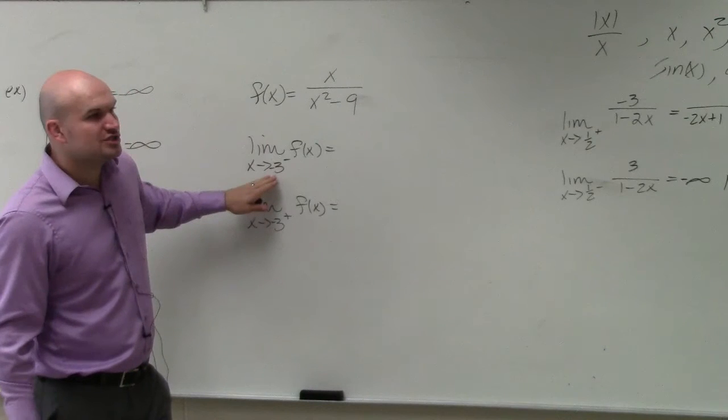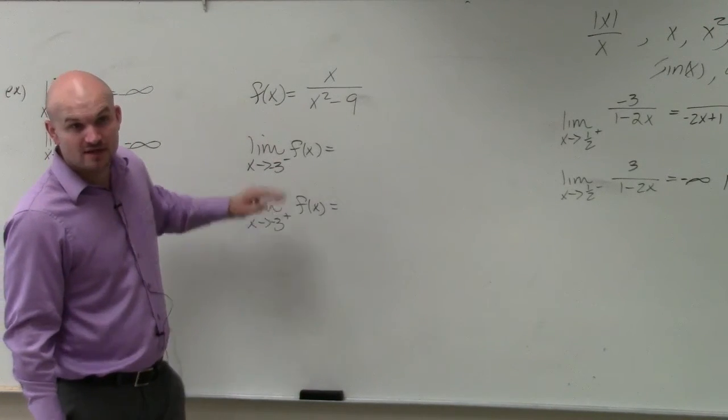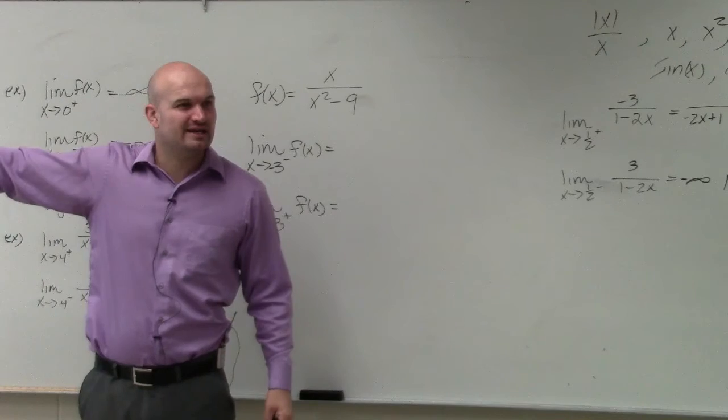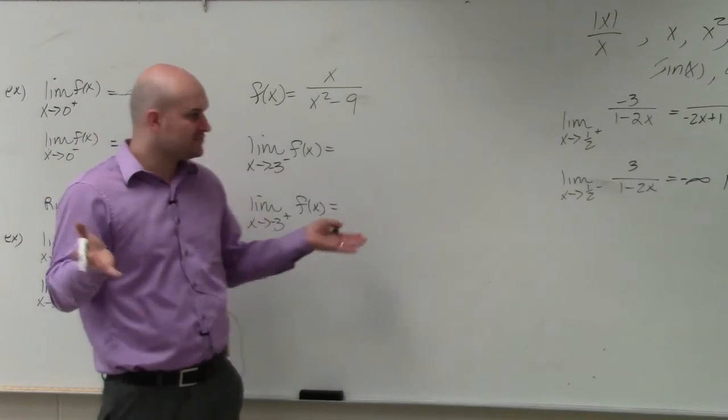What we can do is just choose smaller, smaller numbers that are really, really close. So rather than doing a whole table like we did, just pick one value that's really, really close.